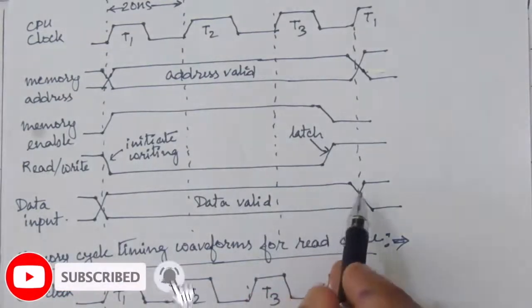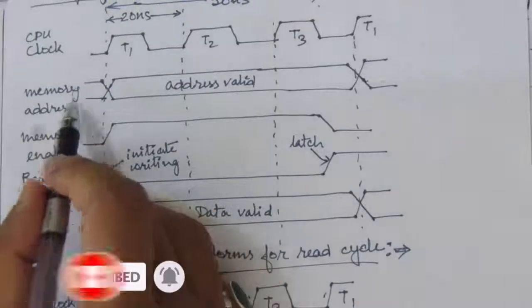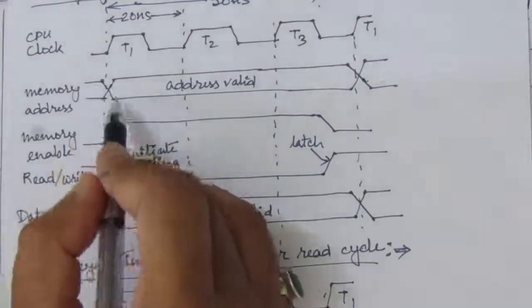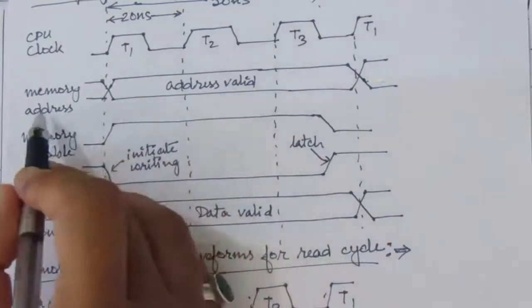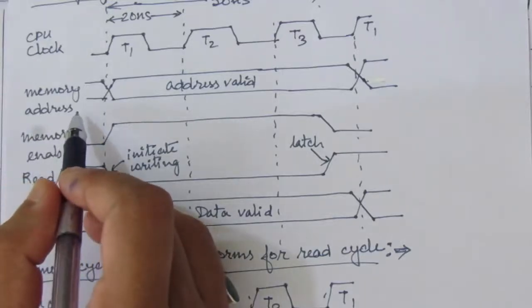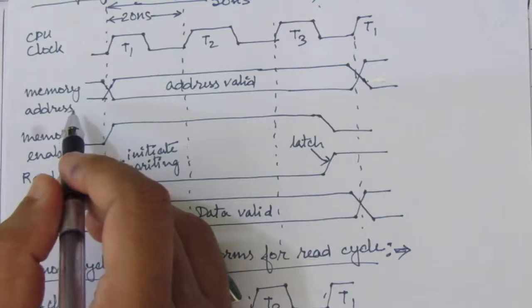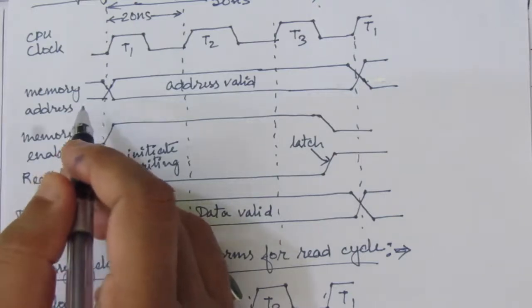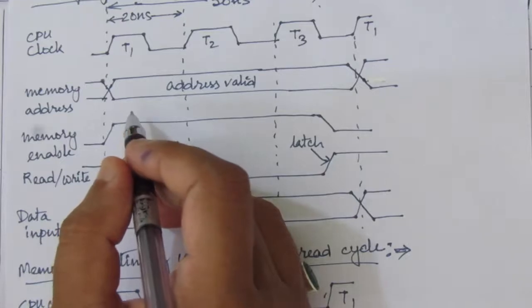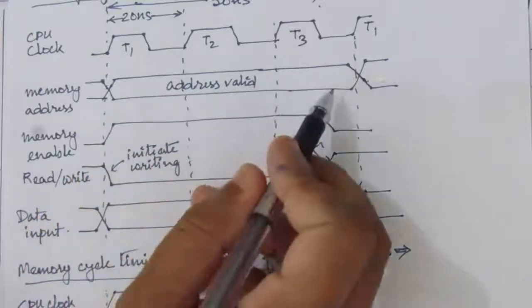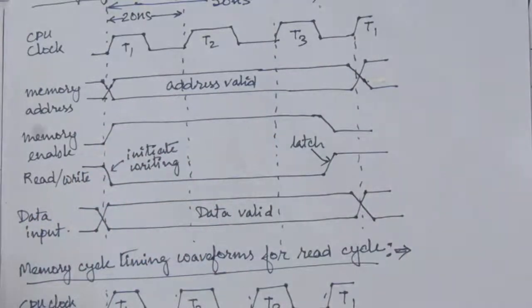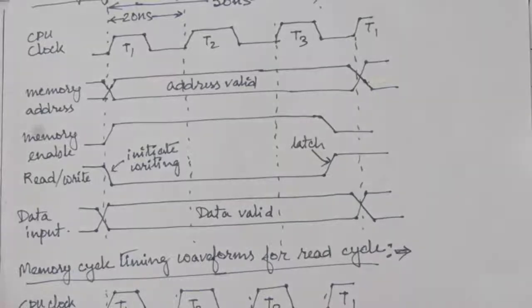For the memory address and data input waveforms we have two cross-coupled lines. This means whenever we have a low here we have a one also — the memory address contains multiple inputs, whether it is a 2-bit, 3-bit, or 20-bit address. The ones are represented by the upper line and zeros by the lower line. The two lines that cross each other in the address and data waveform designate a possible change in value across multiple lines.